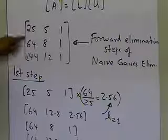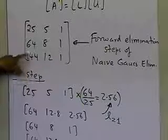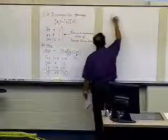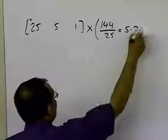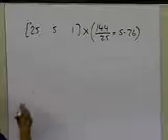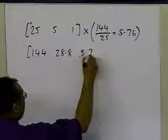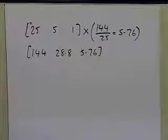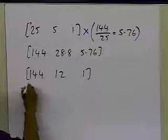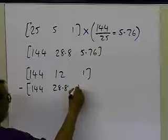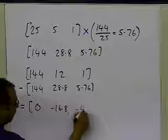To make the entry at row 3, column 1 (which is 144) equal to 0, I divide the first row by 25 and multiply by 144, giving a multiplier of 144/25 = 5.76. Multiplying the first row [25, 5, 1] by 5.76 gives [144, 28.8, 5.76]. Subtracting this from the third row [144, 12, 1] gives [0, −16.8, −4.76].